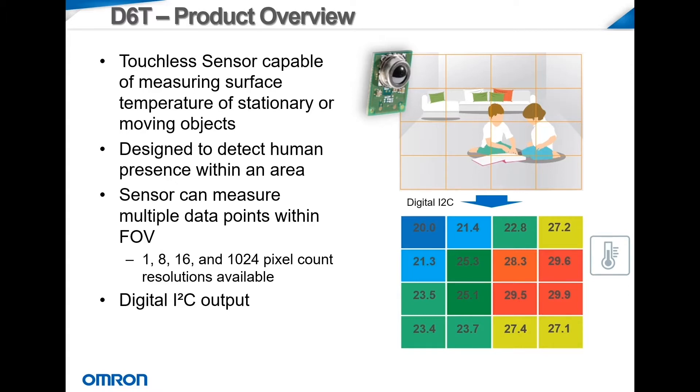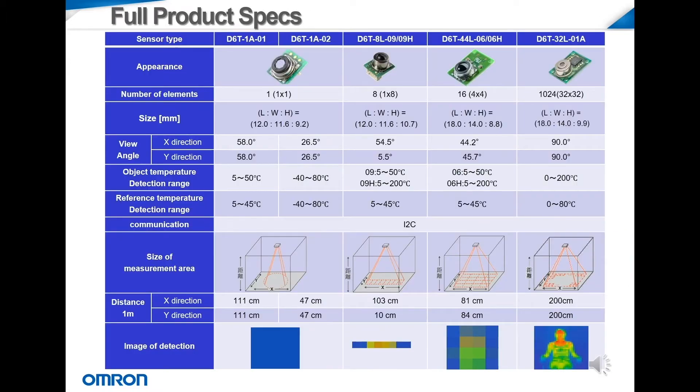This table goes over the various different products that we have available in the D6T family. Each product offers their own unique advantages in its resolution or number of pixels, temperature detection range, and field of view angle.